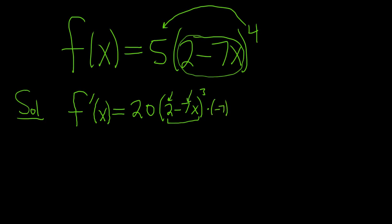Again, we use the power rule and the chain rule. So you don't touch the inside. You bring down the 4. 4 times 5 is 20. You leave the inside untouched, and then you multiply by the derivative of the inside, which is negative 7.